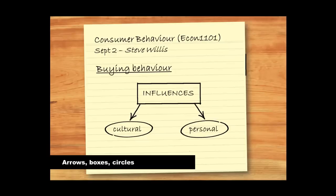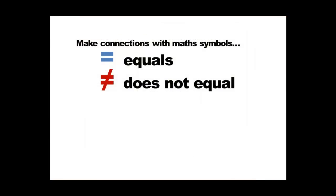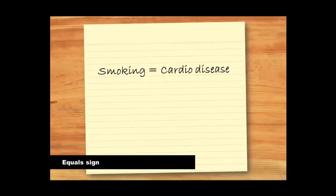Or you can show the relationships between different ideas using math symbols. For example, the lecturer may say something like, smoking is a leading cause of cardiovascular disease. And this can be written simply as, smoking equals cardiovascular disease.